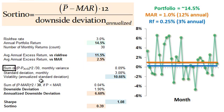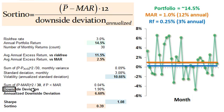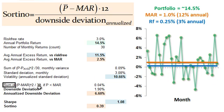For the denominator, it's analogous to the volatility calculation but uses the column where we compute portfolio return minus the minimum acceptable return, squared. We're averaging those squared differences by dividing by the total count. Now, 15 of the 30 months had portfolio returns below the hurdle, but we divide by the full 30 — not 15 — because that way, the fewer times we fall below the hurdle, the smaller this downside variance becomes.